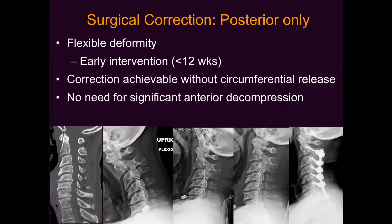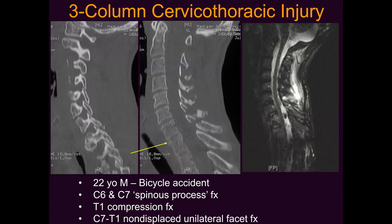The main workhorse for post-traumatic deformities is a posterior-only approach, particularly if there's a rotational or translational component. If it's kyphosis only, that can potentially be addressed with an anterior-only approach. The principles are similar to degenerative deformities, where if there's enough flexibility to gain realignment, a posterior-only procedure can be done.